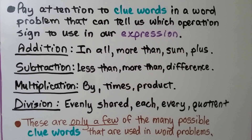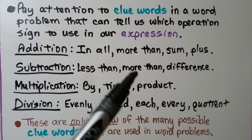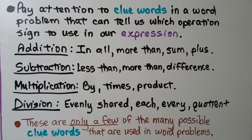Pay attention to clue words in a word problem that tell us which operation sign to use. For addition: in all, more than, sum, or plus. For subtraction: less than, more than, difference. For multiplication: by, times, product. For division: evenly shared, each, every, or quotient. These are only a few of the many possible clue words. Note that both addition and subtraction use "more than," so you may need to read the surrounding words to find out which operation to use.